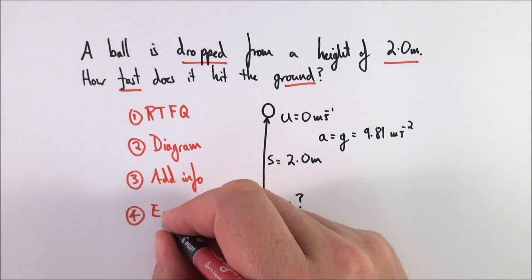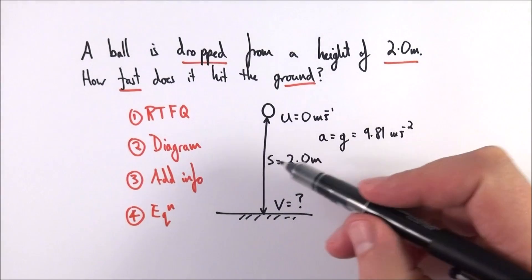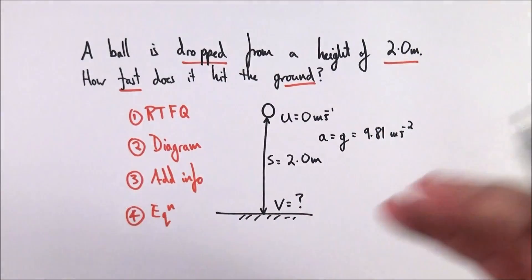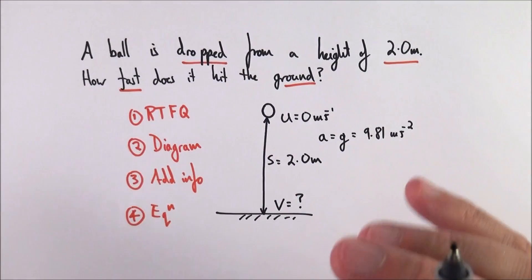Step four is to write down an equation. So we have U, A, S, and V. It's a problem to do with motion, so I'm going to think about my SUVAT equations. Refer back to my data book, or hopefully with practice you'll recognize what the correct equations are.